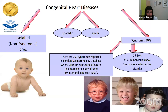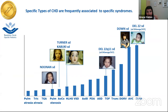Sometimes it's the heart that helps us make the diagnosis. When we see pulmonary stenosis, especially supra-valvar pulmonary stenosis, we think of Noonan syndrome. Left-sided lesions suggest Turner or Kabuki. Tetralogy of Fallot, truncus, or interruption of the aortic arch suggests microdeletion of 22q11. The atrioventricular canal suggests Down syndrome or Alagille. The type of congenital heart defect helps us make the genetic diagnosis.